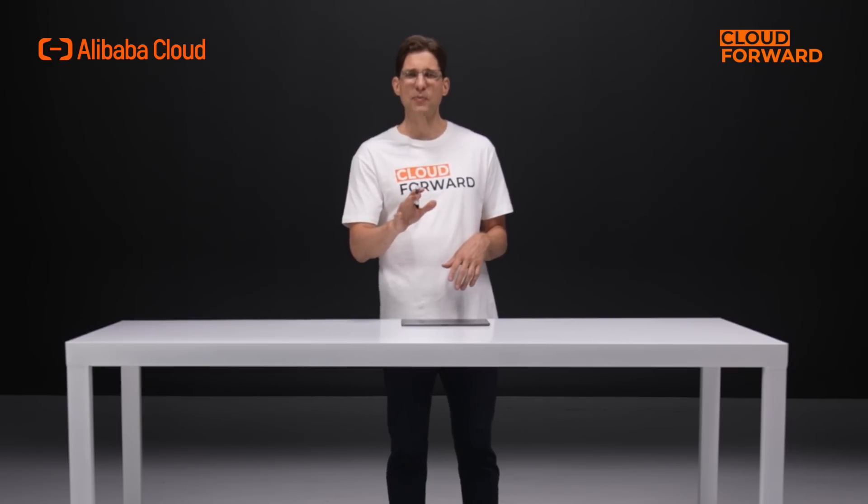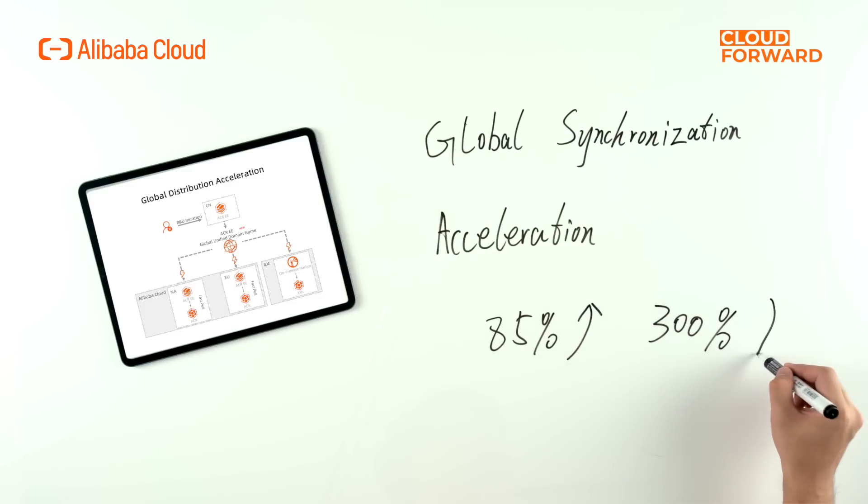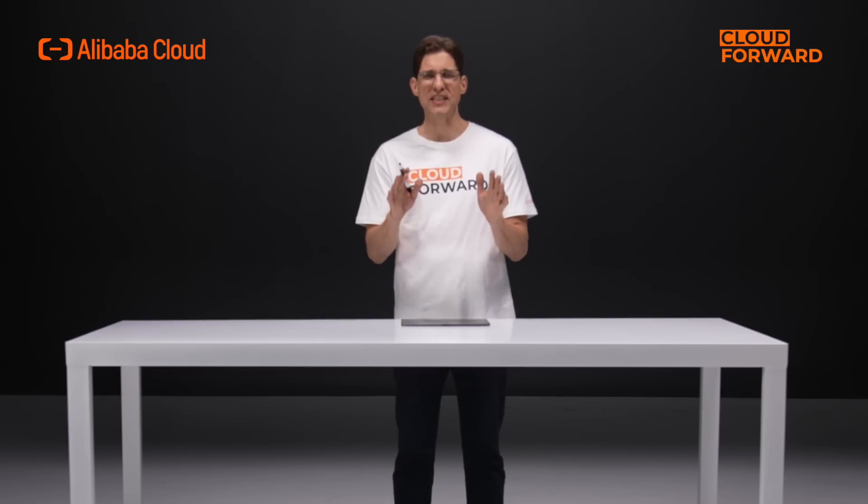Now, with ACR Enterprise Edition's global synchronization acceleration, container images only need to be pushed once and will be automatically distributed globally in multiple geographies. This allows you to increase global distribution efficiency by 85%, while decreasing self-building costs by 300%. Moreover, the system can intelligently pull the images nearest to you via ACR Enterprise Edition's global unified domain name.